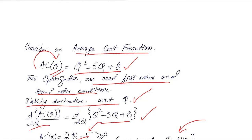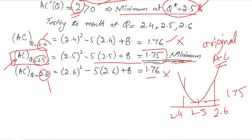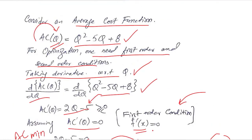The minimum value of average cost is 1.75, achieved at the critical value of q equals 2.5. Optimization can be done using calculus for any economic situation — it was average cost here, but you can apply it to any other economic function such as utility or revenue.